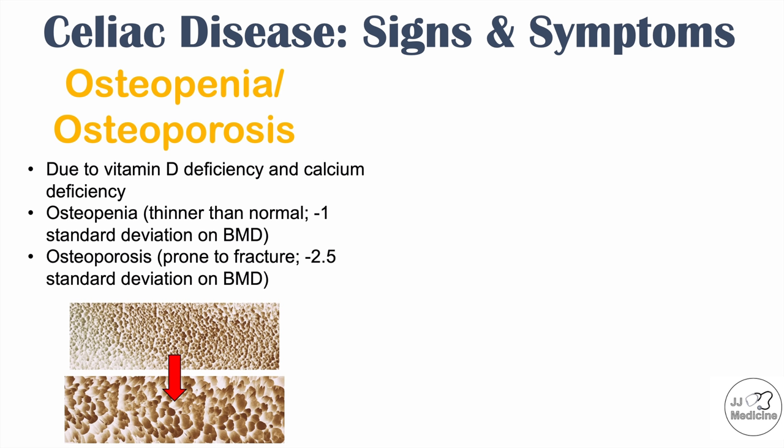An interesting skin manifestation is dermatitis herpetiformis — an autoimmune cutaneous eruption of inflammatory papules and vesicles that are intensely pruritic, meaning very itchy. It occurs in roughly 10 to 20% of celiac disease patients. Importantly, all patients with dermatitis herpetiformis have celiac disease, though only a subset of celiac disease patients have dermatitis herpetiformis.